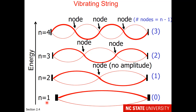For the first jump rope level, there are no nodes in the middle of the jump rope. For the second level, the node is in the middle — and you'll see that. It's not a magic jump rope; the node automatically appears in the middle. A node is a place with no amplitude. For the third energy level, there are two nodes, and for the fourth energy level, there will be three nodes. So given energy levels 1, 2, 3, and 4, the number of nodes is equal to that number minus 1.